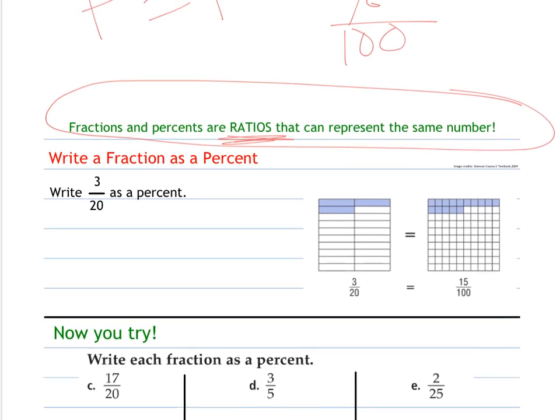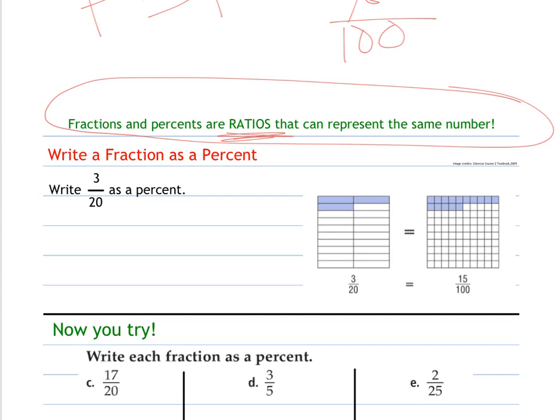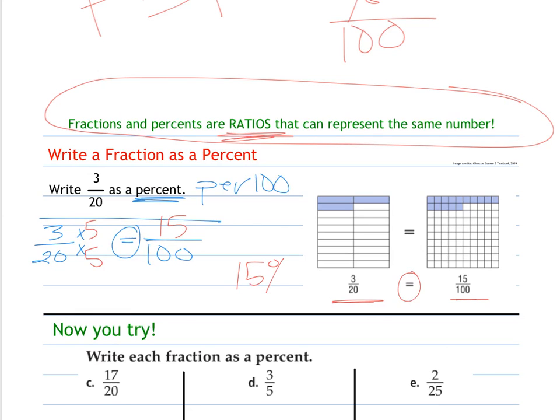We're going to practice writing a fraction as a percent. For example, if I'm asked to write 3/20 as a percent, well, percents I know are per 100. Last time I learned about making fractions equivalent. So I want this one to be out of 100, but not changing the value. I can change 20 to get to 100 by multiplying by 5. 3 times 5 is 15. So 3/20 is the same as 15/100, which is 15%.